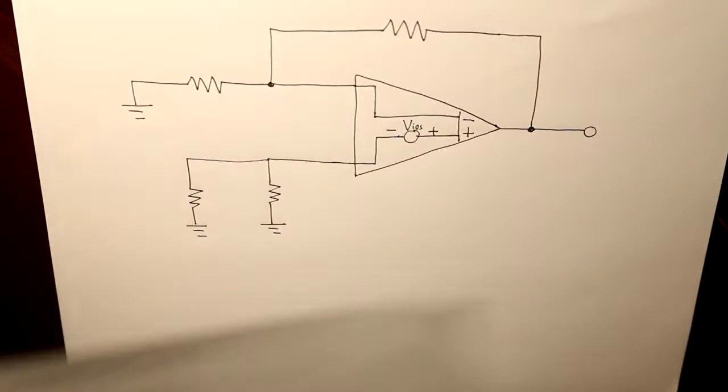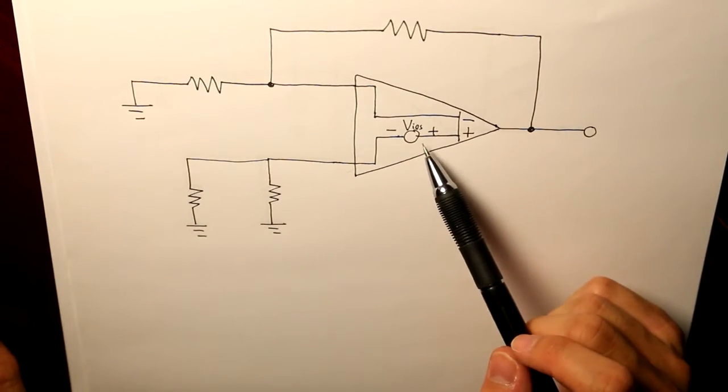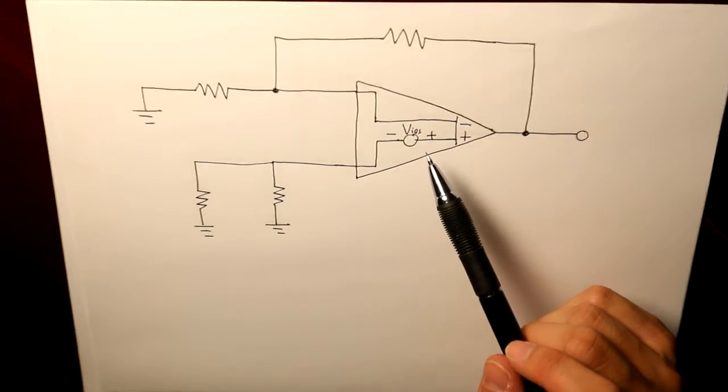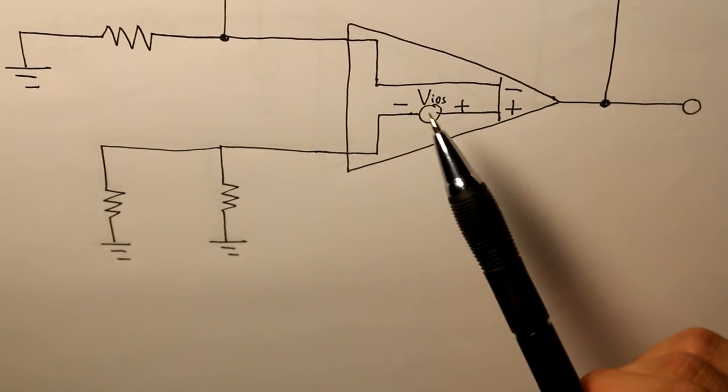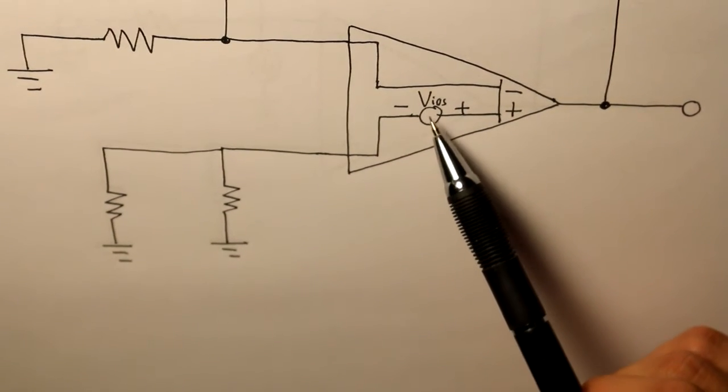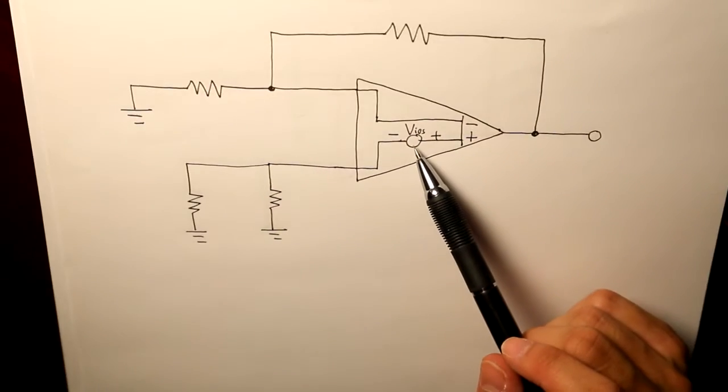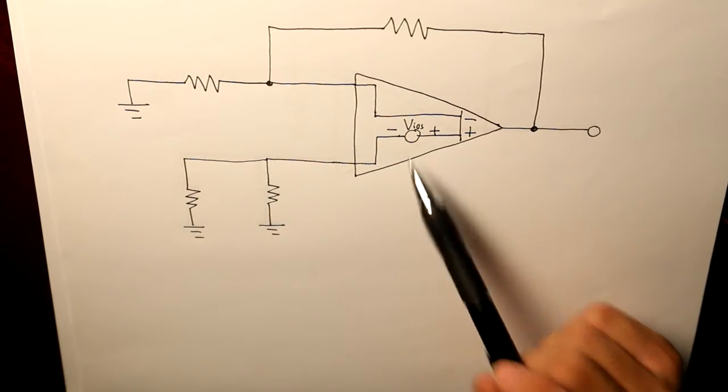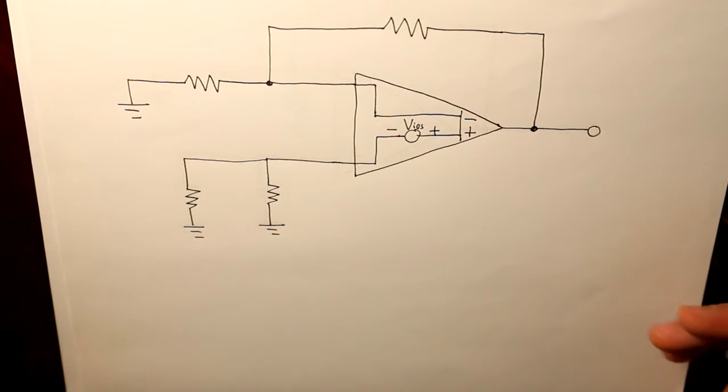So let's look at offset voltage. If you can't take a look, it may be a little bit too small, I'm going to zoom in a little bit for you guys to take a closer look. But this is the offset voltage located inside the op amp, and this offset voltage is simply going to cause a discrepancy.